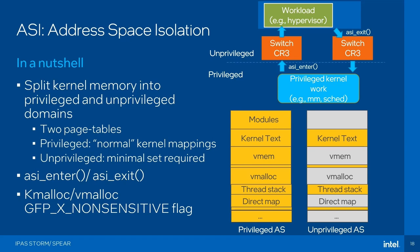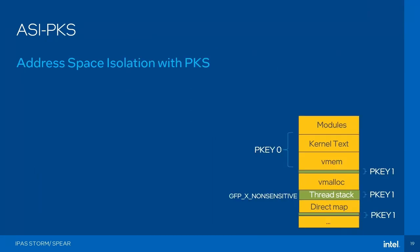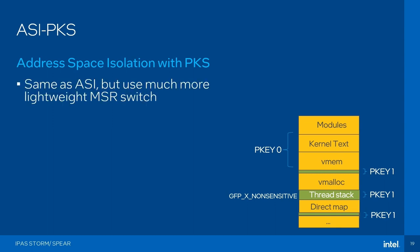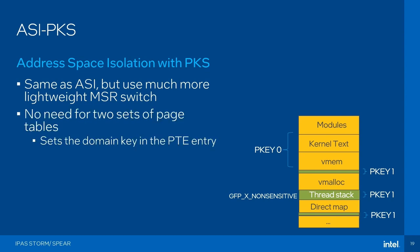Looking at how it works: you have ASI enter — if you're in privileged kernel work like the memory manager or scheduler, once you go into some other workload you enter the unprivileged domain, switch CR3s, do your workload — for example some hypervisor work — and then once you exit and need to go back to privileged work, you do ASI exit. It's very similar to what I mentioned with PKS, but this is switching the address space via the CR3 register instead of writing an MSR. Basically what I did is implement an ASI-like drop-in replacement with PKS — it's very similar to ASI, but instead of doing a CR3 switch, I switch the MSR as already discussed. There's no need to keep two sets of page tables; we can do everything in one. We just need to make sure the protection key is actually the right one.